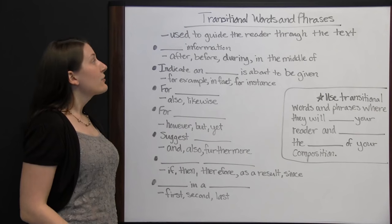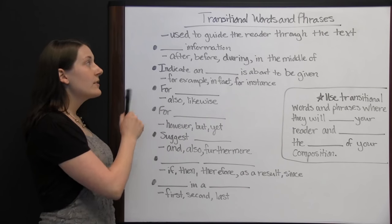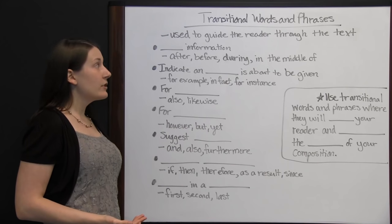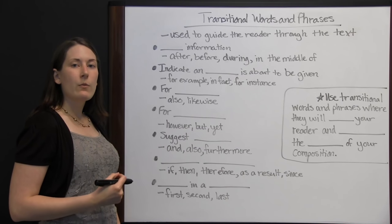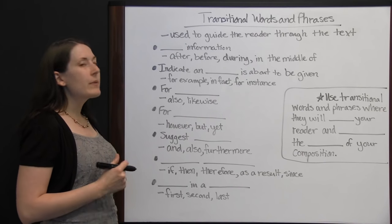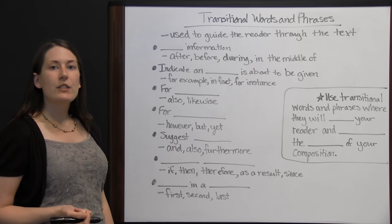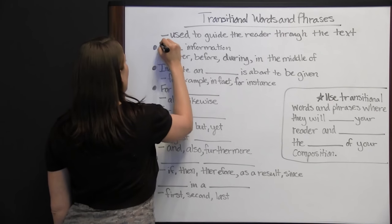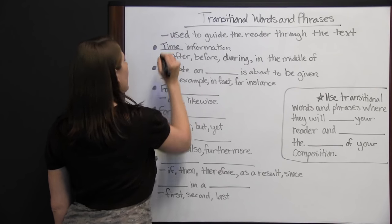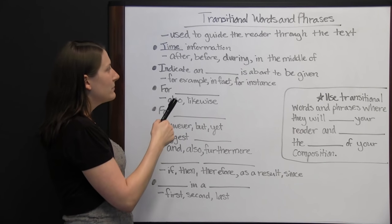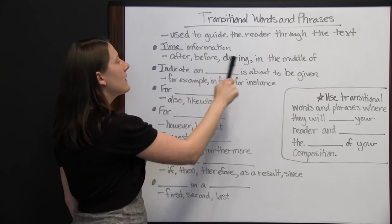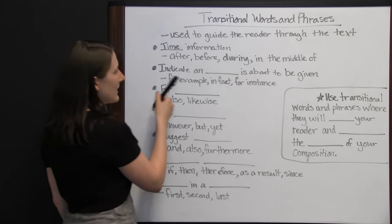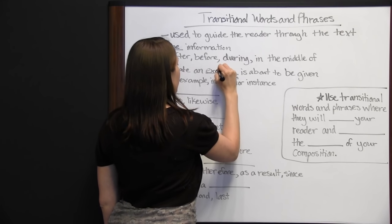Transitional words and phrases are used to guide the reader through the text. You've probably seen many of these before, but let's look at the different ways transitions can be used. First, transitions can show time information — words like 'after,' 'before,' 'during,' and 'in the middle of' all tell you when in time something is happening. You can also have transitions that indicate an example is about to be given, such as 'for example,' 'in fact,' and 'for instance.'